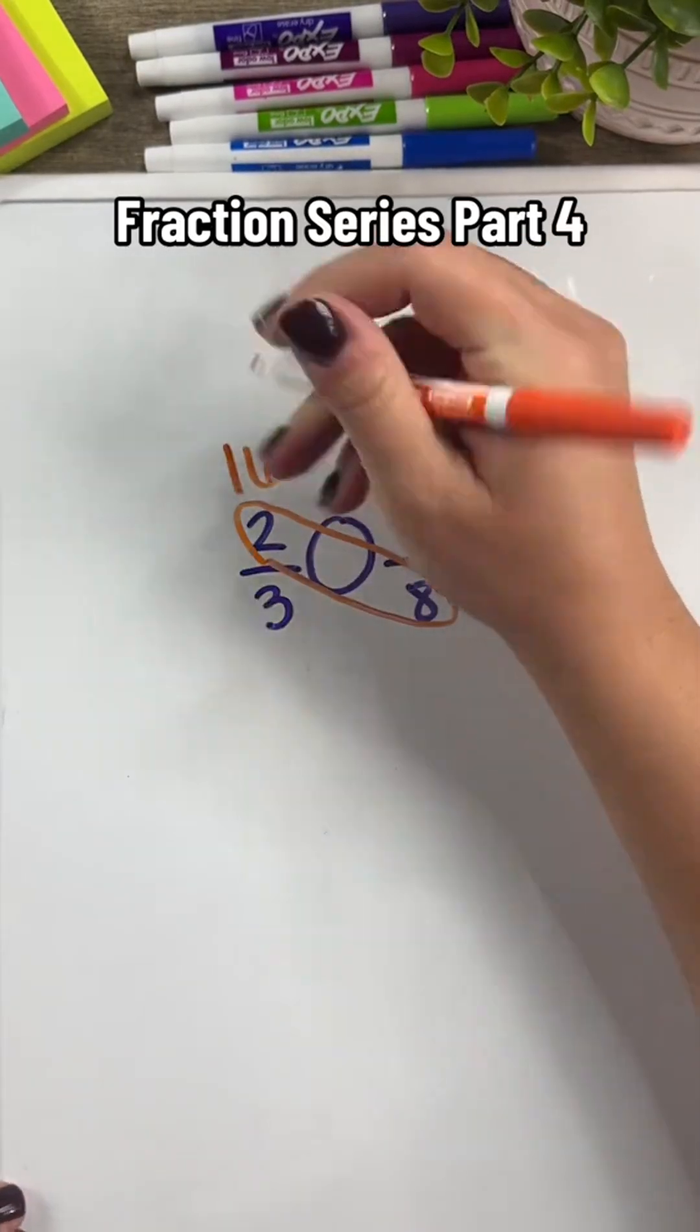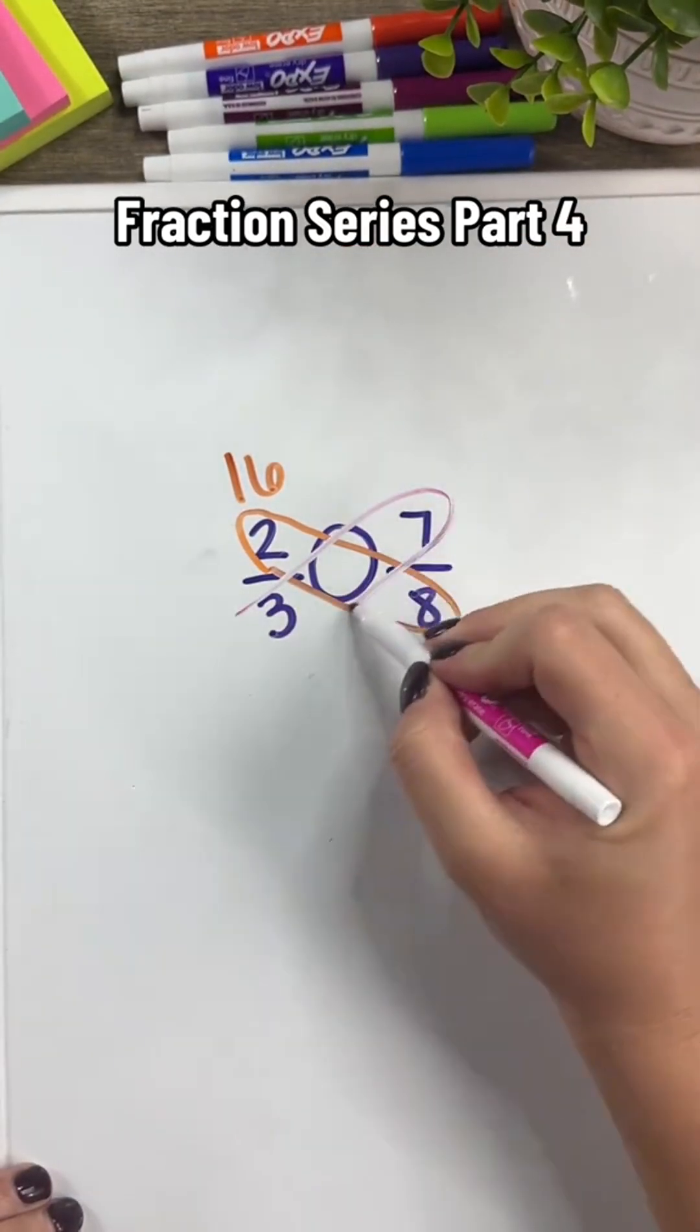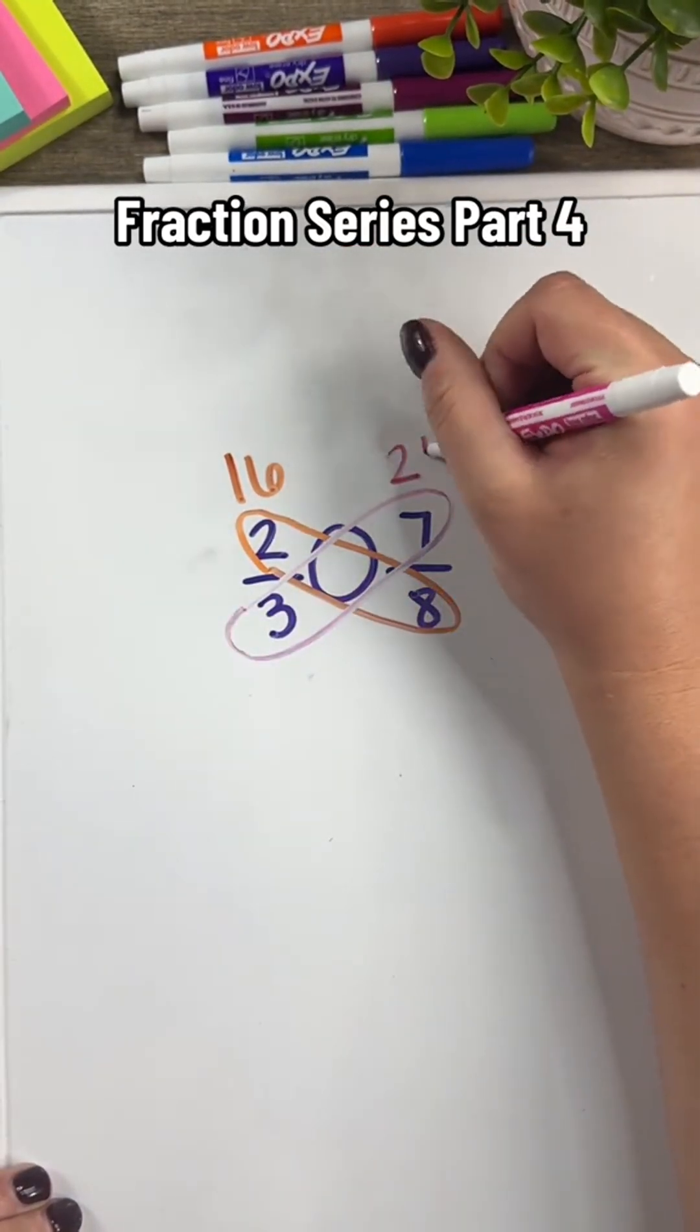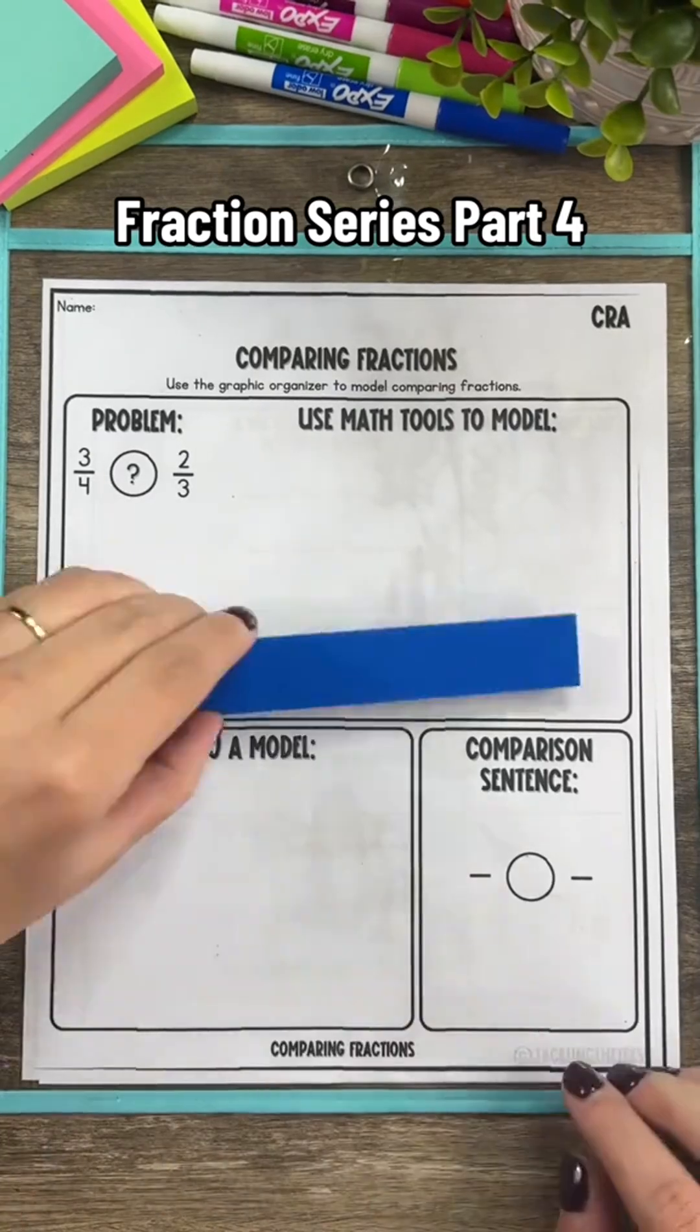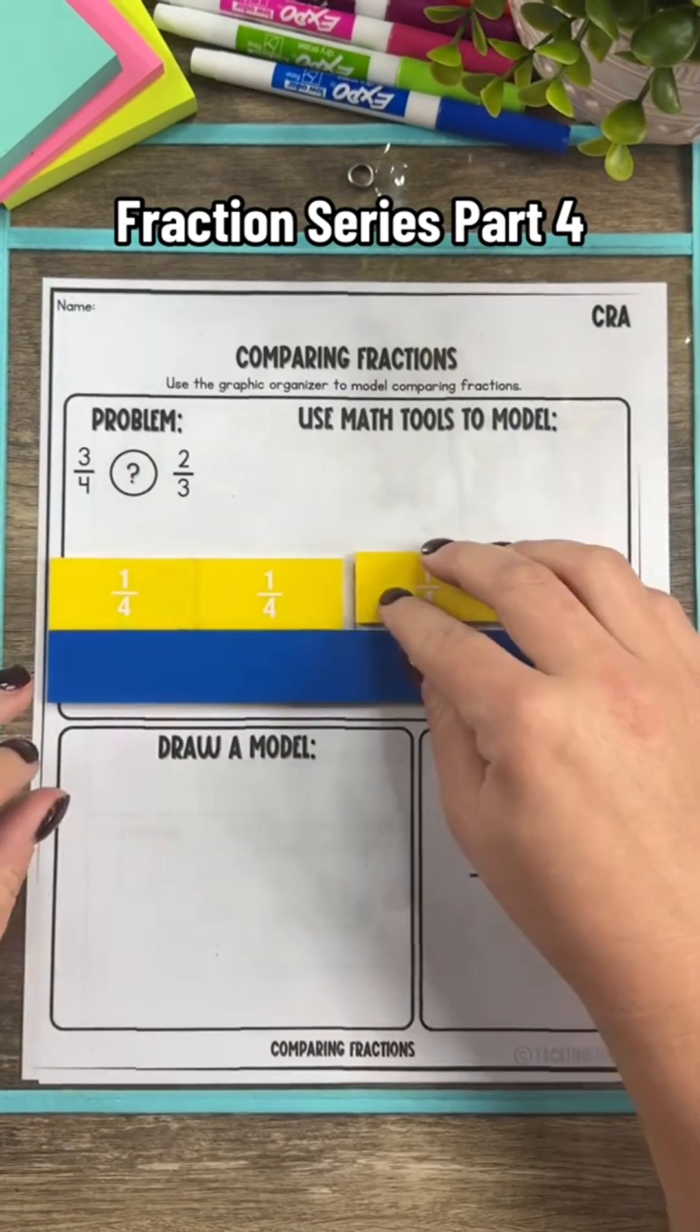Instead of jumping straight to tricks whenever we're comparing fractions, let's approach this concept at a more conceptual level. Let's start with models and then we'll build more to an abstract way of thinking.